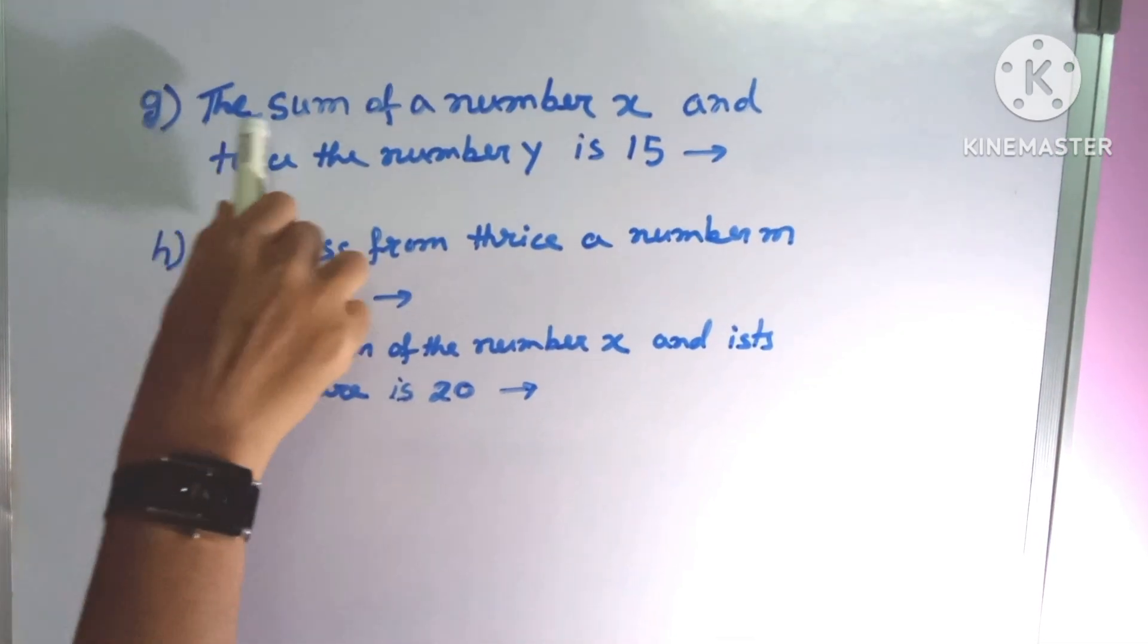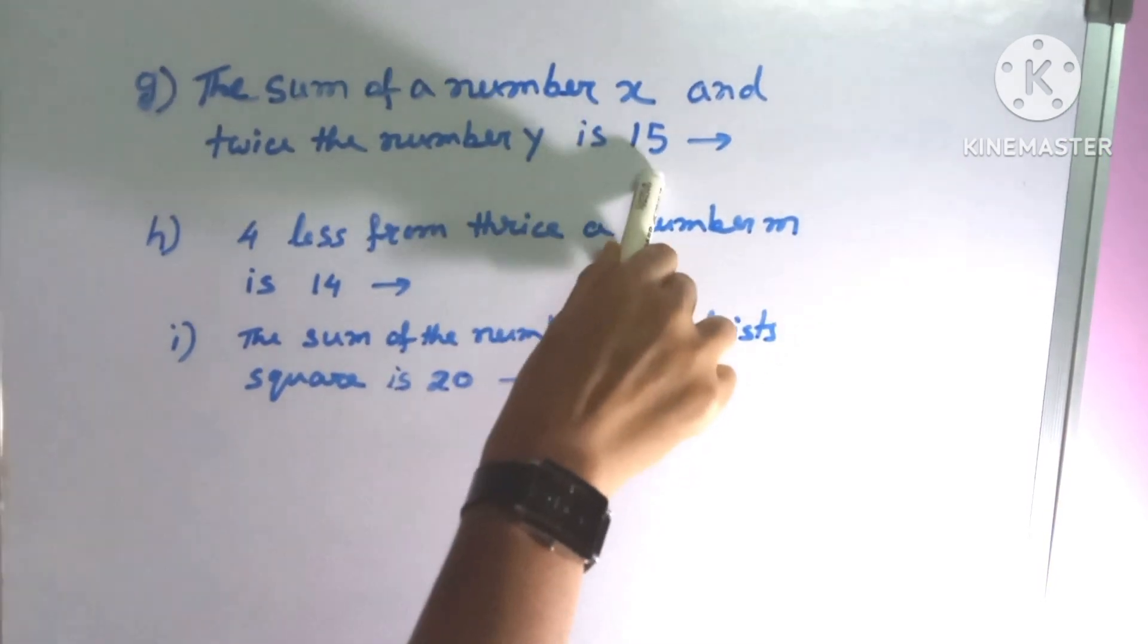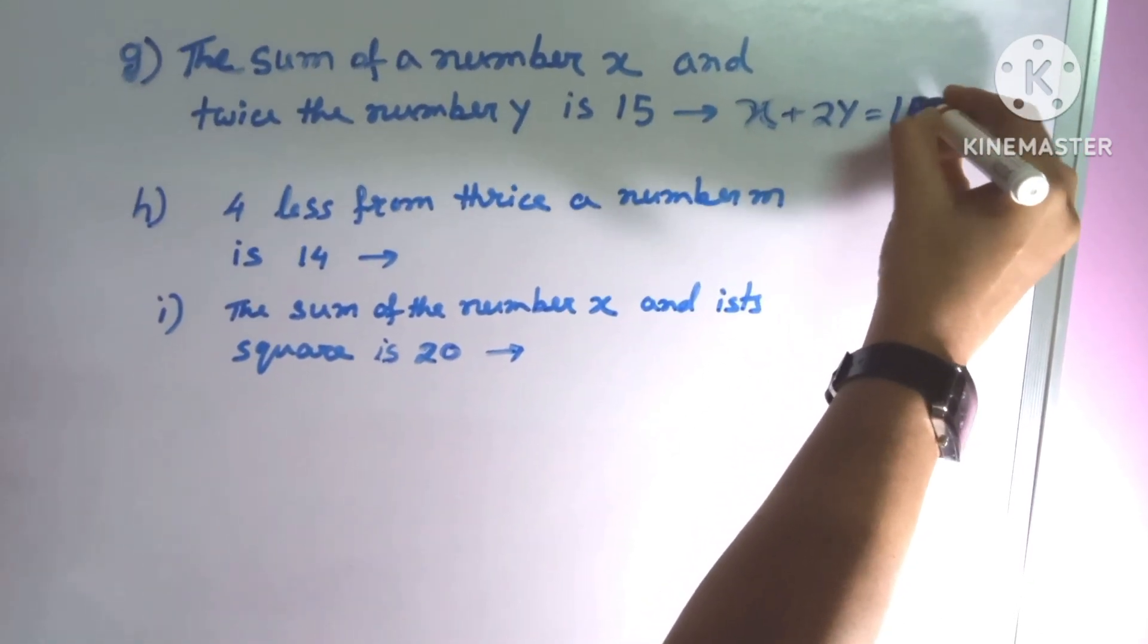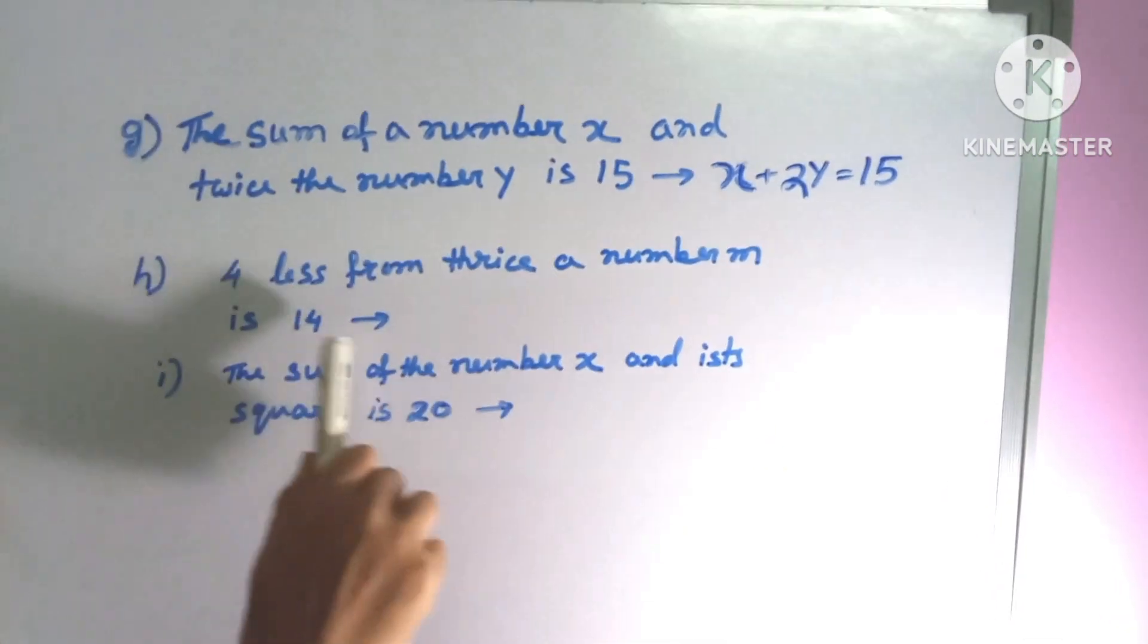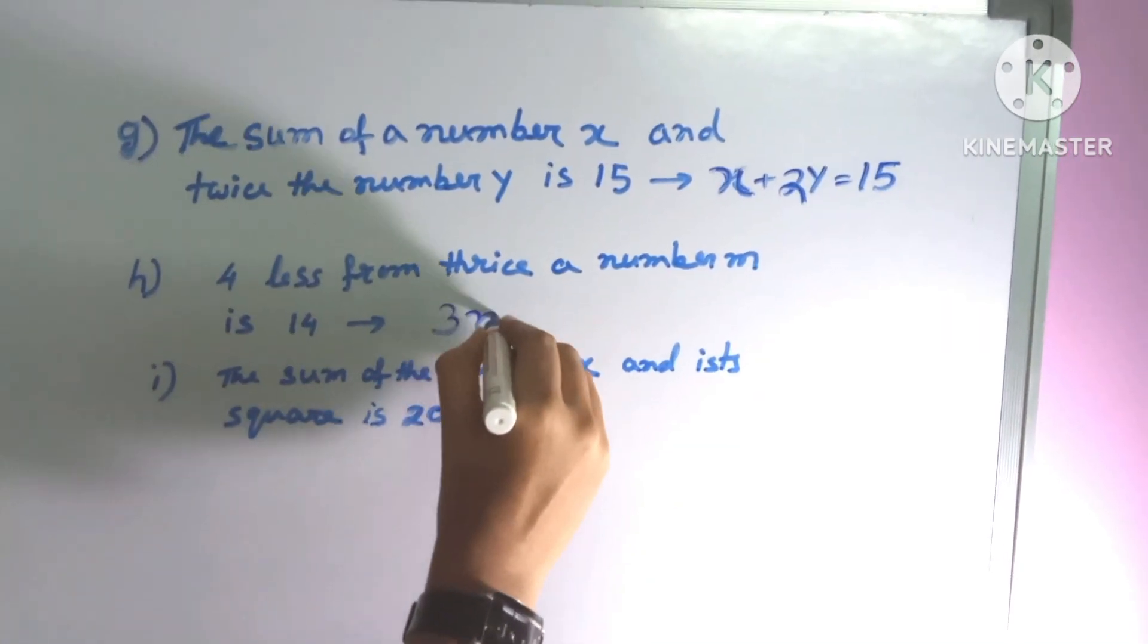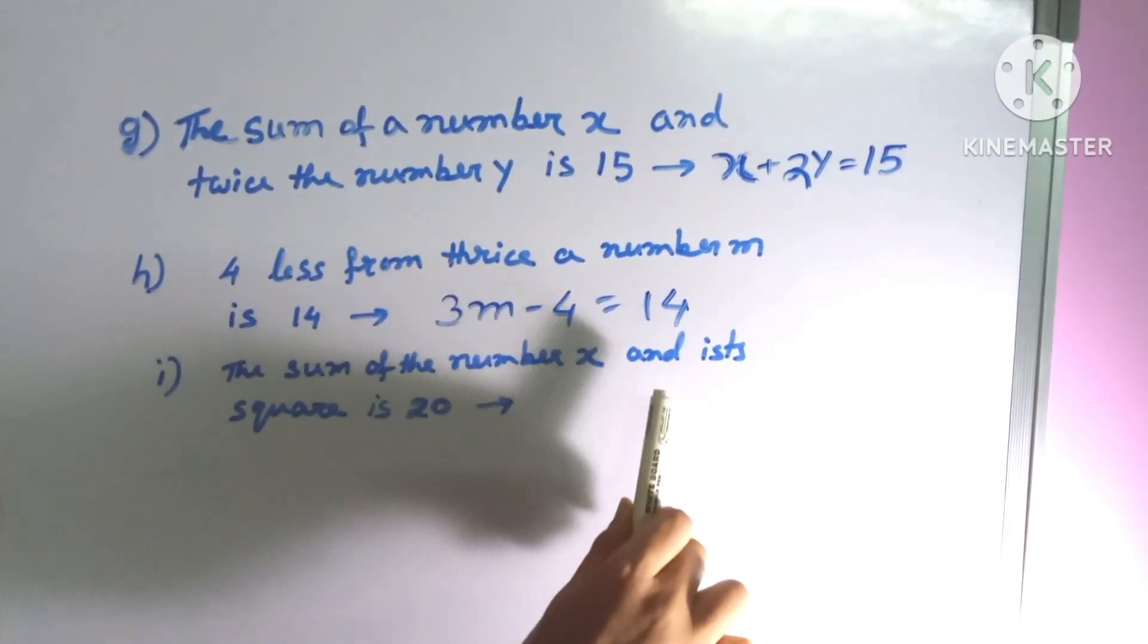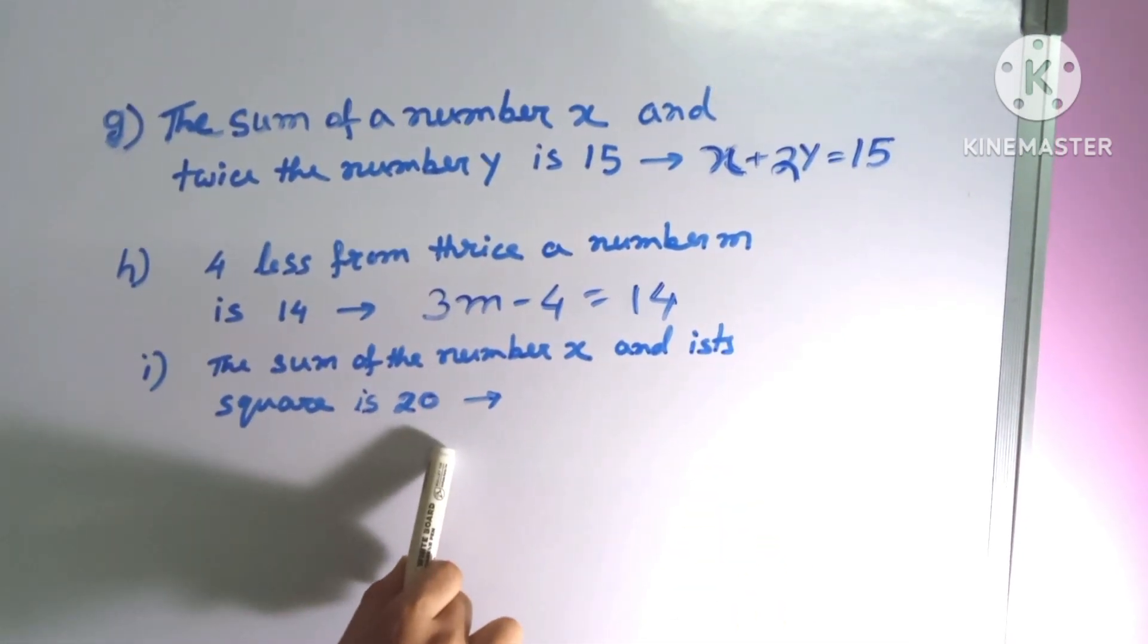Here are some more examples. The sum of a number X and twice the number Y is 15, the equation will be X plus 2Y equals 15. 4 less from 3M is 14, the equation will be 3M minus 4 equals 14. Last one: the sum of the number X and X squared is 20, the equation will be X plus X squared equals 20.